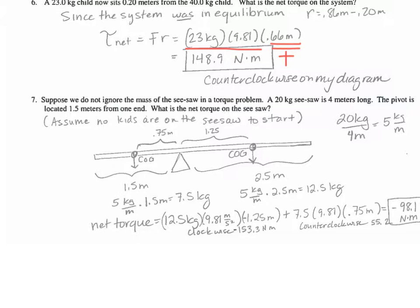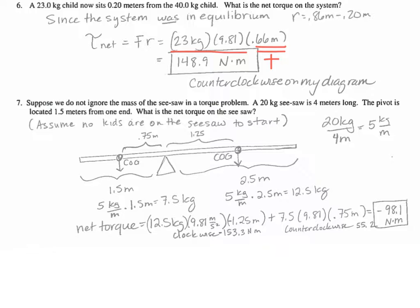One more example. Suppose we do not ignore the mass of the seesaw on the torque problem. A 20-kilogram seesaw is 4 meters long. The pivot is 1.5 meters from one end. What is the net torque on the seesaw? In this scenario, what I did was I first found the mass per meter. The seesaw is 5 kilograms per meter. I figured out that the left side must have a mass of 7.5 kilograms, and the right side must have a mass of 12.5 kilograms. Then I figured out the net torque by calculating the clockwise torque on the right side and the counterclockwise torque on the left side, and I wound up with my net torque, which was negative 98 newton meters.